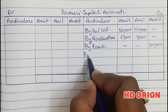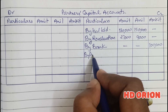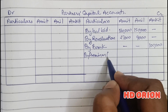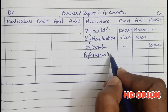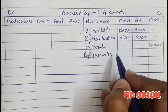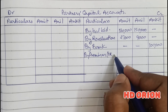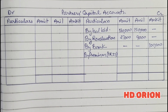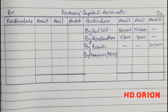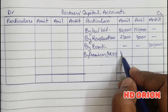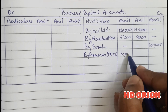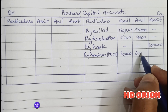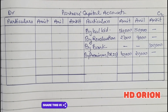The premium for goodwill is distributed in the sacrificing ratio, which is 2 is to 1. The total goodwill amount brought is rupees 60,000, so rupees 40,000 goes to the first partner Amit and rupees 20,000 goes to the second partner Anil.